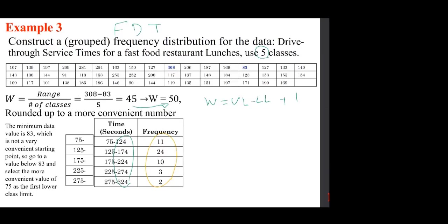The frequency distribution table is practically done. Note that n adds up to 50, the same total size we had before. You always want to add up the frequencies to make sure you arrive at the same total size. If you don't, you've made a mistake somewhere — this is a good way to check your work.